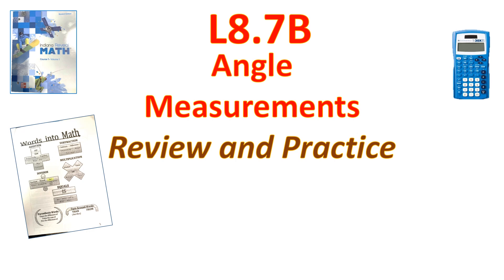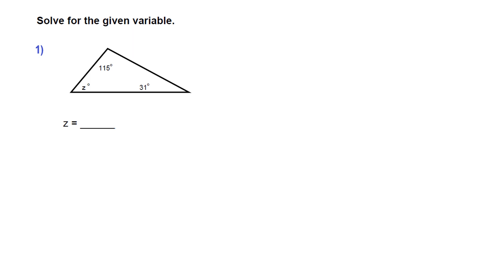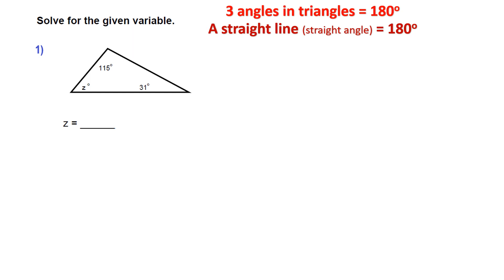I wanted to do a quick review with some practice on what we did in our previous lesson — the remote interior angles. We'll postpone lesson 8.8 to our next lesson. I'd like you to write two notes: first, the three angles inside a triangle always equal 180 degrees. Second, a straight line, also known as a straight angle, is equal to 180 degrees. As long as I can use that number, I can always find the missing angle.